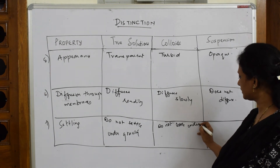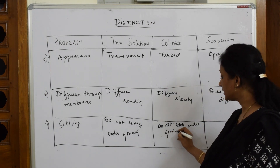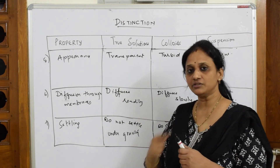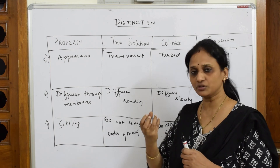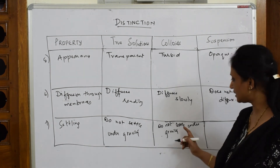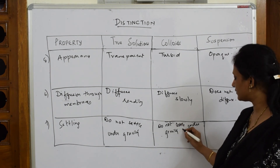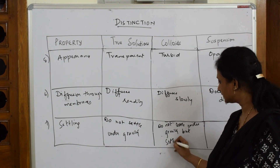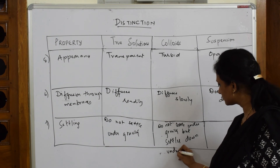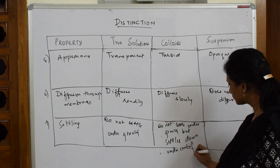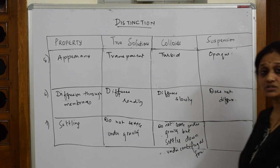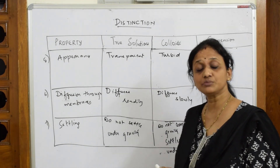For colloids, although they do not settle under gravity, they can be made to settle using centrifugal force — continuous rotation pulls the colloid particles down due to centrifugal force. So colloids do not settle under gravity but settle under centrifugal force.